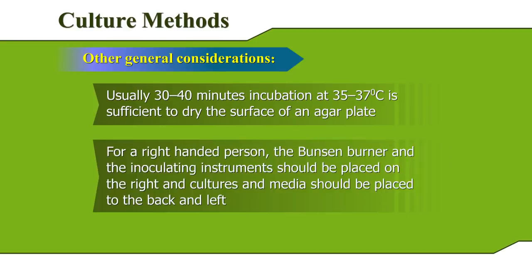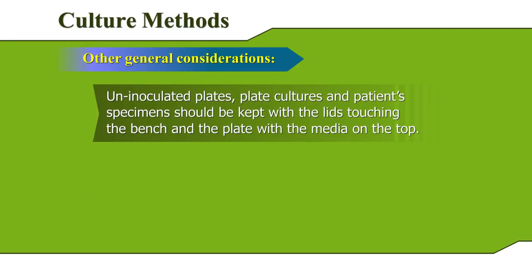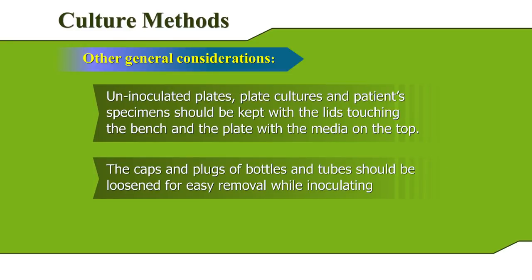For a right-handed person, the Bunsen burner and the inoculating instruments should be placed on the right, and cultures and media should be placed to the back and left. Uninoculated plates, plate cultures, and patient specimens should be kept with the lids touching the bench and the plate with the media on top. The caps and plugs of bottles and tubes should be loosened for easy removal while inoculating.